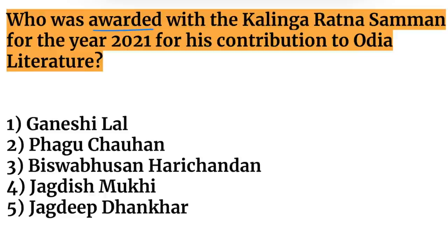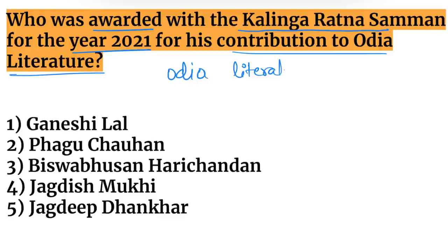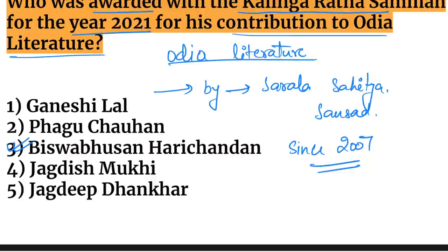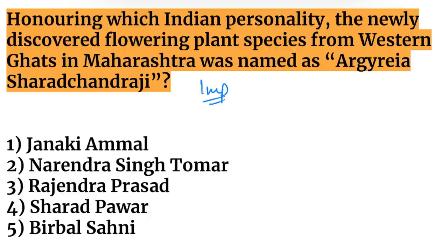Next question: who was awarded the Kalinga Ratna Samman for 2021 for contribution to Odia literature? The person honored is Bishwa Bhusan Harichandan. The Kalinga Ratna Samman is given by Sarala Sahitya Sansad and has been awarded since 2007.